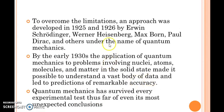So in order to overcome those limitations, an approach was developed in the years 1925 and 1926 by scientists like Schrodinger, Heisenberg, Max Born, Dirac, and others under the name quantum mechanics. The limitations were overcome by this new branch called quantum mechanics.